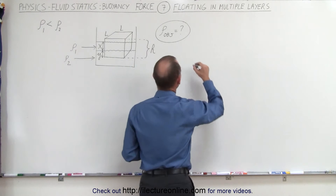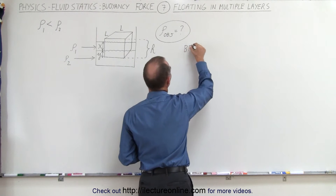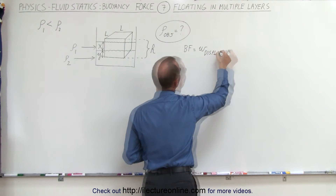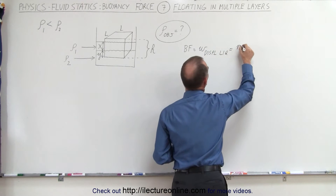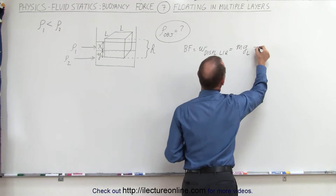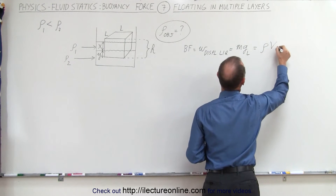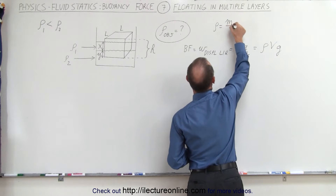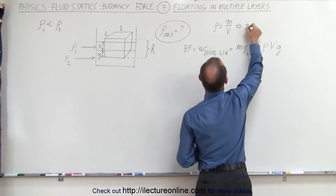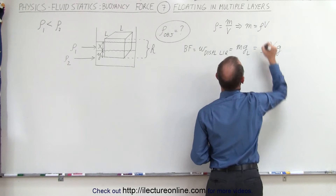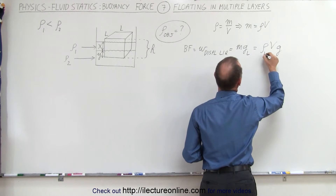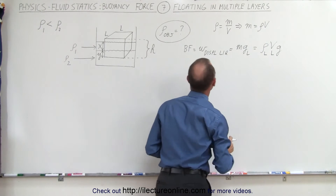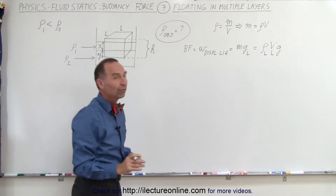We still use the same concept: the buoyancy force is equal to the weight of the displaced liquid, which is equal to mg of the liquid, which is equal to ρVg. Since density equals mass divided by volume, mass equals density times volume — so this is the density of the liquid times the volume submerged times g. That's what provides the buoyancy force.